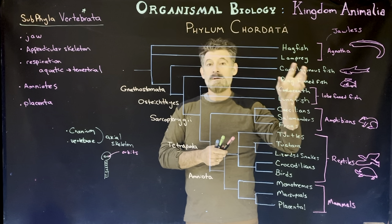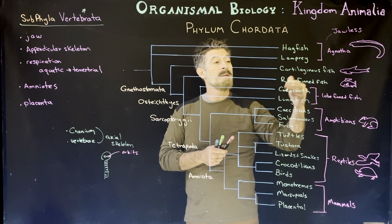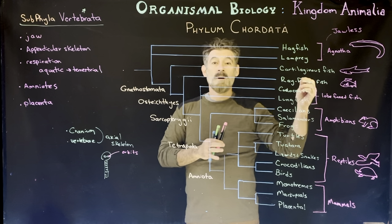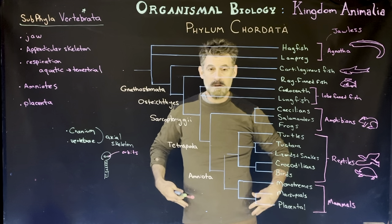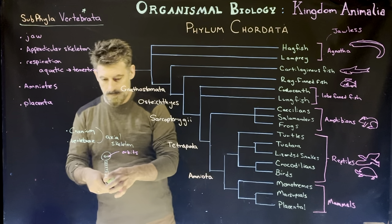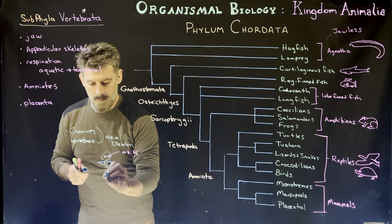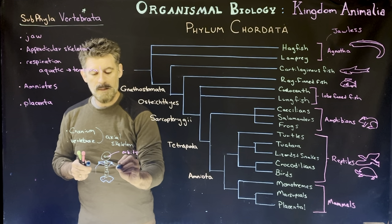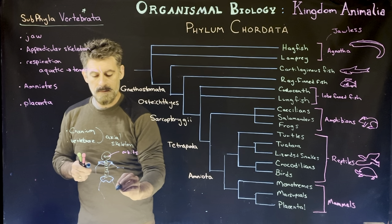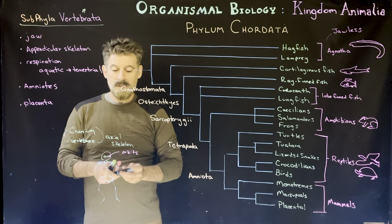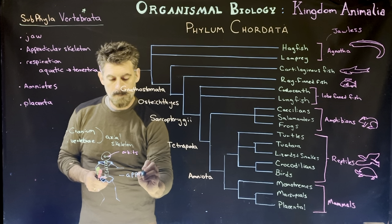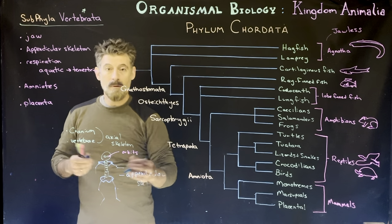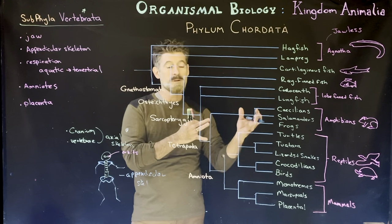Then we have the ray-finned fish, which have true bone — sometimes called the bony fish. As we go through these groups, we'll start comparing the appendages they have, part of the appendicular skeleton, with the development of actual limbs. So a shoulder girdle and a pelvic girdle — extensions from the axial skeleton — and then bones attached to form the appendicular skeleton: shoulders, pelvis, arms and legs, and then hands and feet and digits.